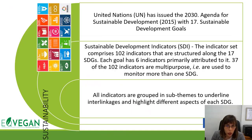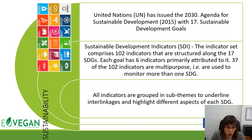We have 102 indicators structured along the 17 sustainable development goals, and each goal has six indicators primarily attributed to it. We need to think about how to tackle those indicators and go in line with sustainable development goals. All indicators are grouped in sub-themes to underline interlinkages and highlight different aspects of each SDG.